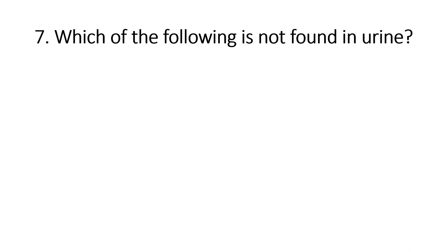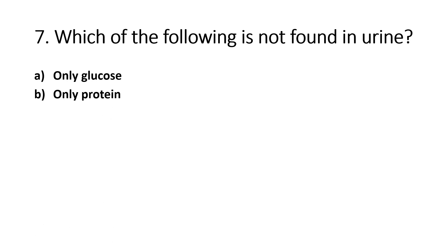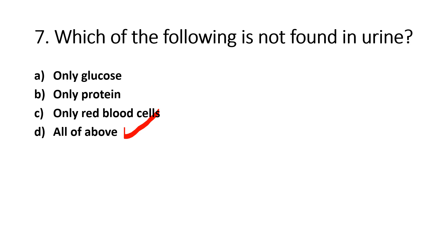Which of the following is NOT found in normal urine? Option A - Only Glucose, Option B - Only Protein, Option C - Only Red Blood Cells, Option D - All of the Above. The right answer is Option D, All of the Above. Glucose, albumin, ketone bodies, blood cells, pus, and bacteria are found in urine only under pathological conditions.